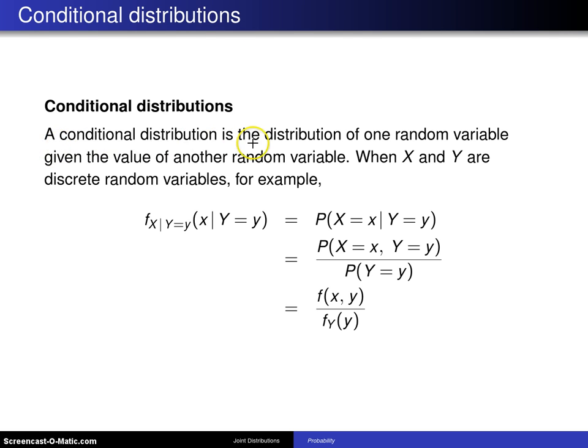A conditional distribution is the distribution of one random variable given the value of another random variable. For example, when X and Y are discrete random variables, this notation right here represents the probability mass function of X given the random variable Y takes on the value little y.